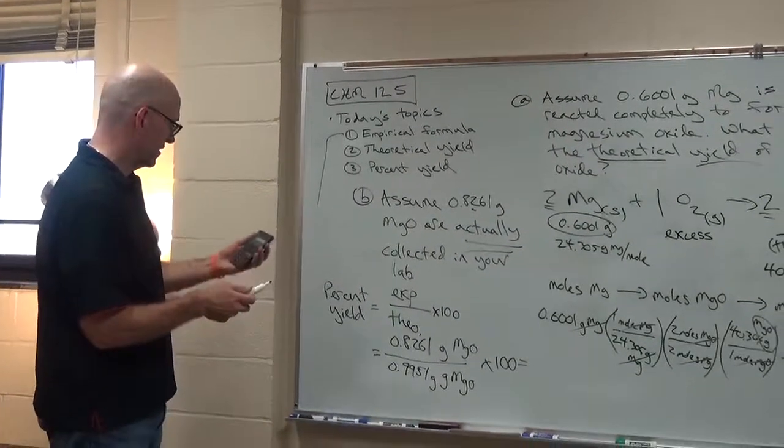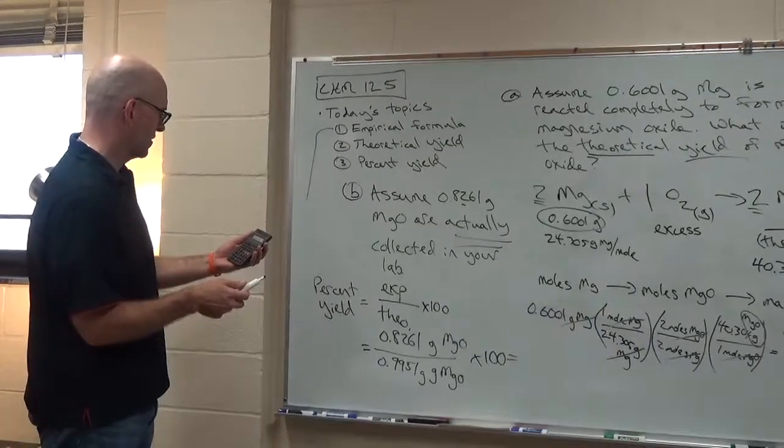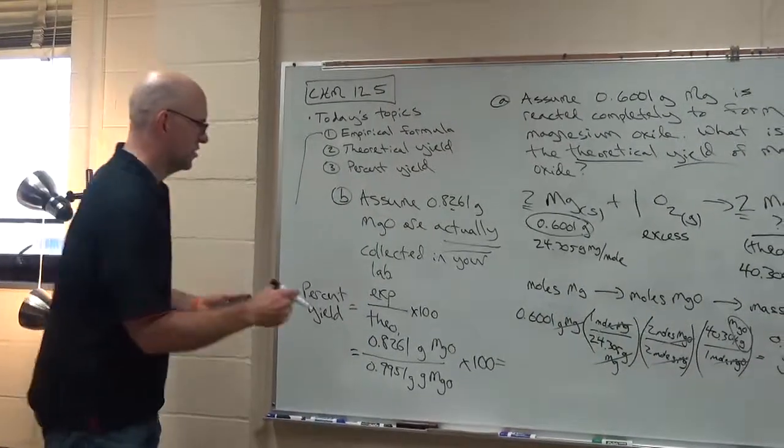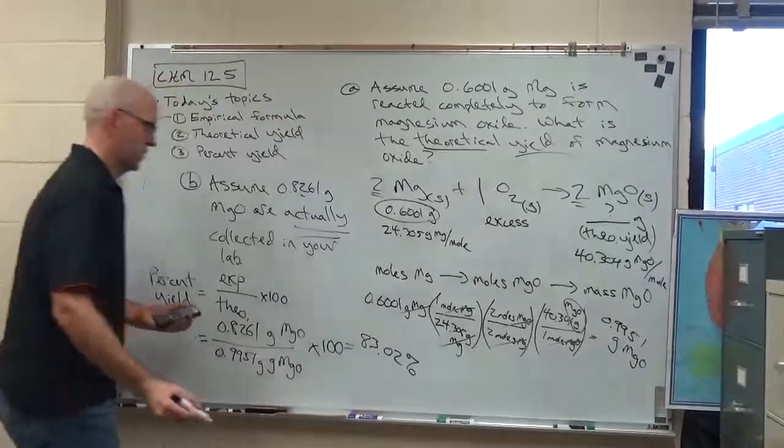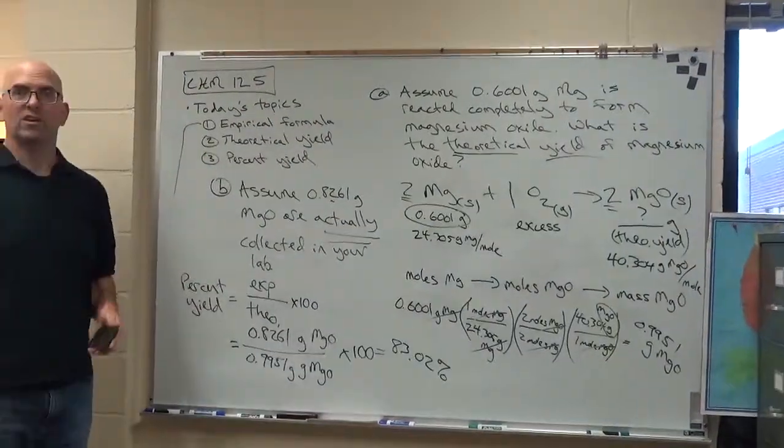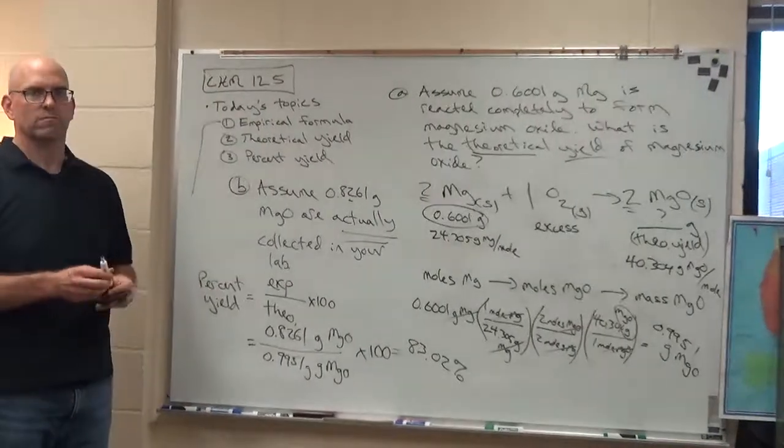0.8261 divided by 0.9951. Let's go to 4 sig figs, 83.02%. So if somebody says, what was your percent yield, how'd you do? Well I got 83% yield. That's pretty good.